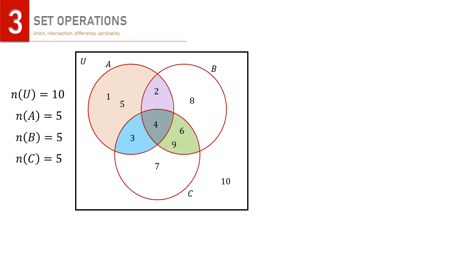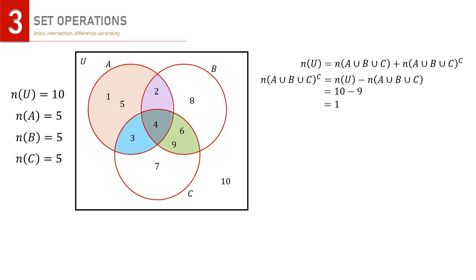We can then find three important formulas. The first is the cardinality formula for the biggest set, n(U), which is similar to the formula before. Given some information, we may find the cardinality of the union complement by modifying that formula. Another key set is the union of all three sets, A∪B∪C, and from the Venn diagram we can determine its cardinality formula.